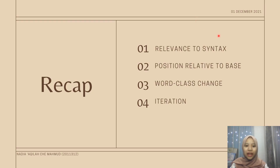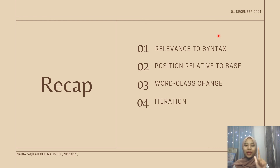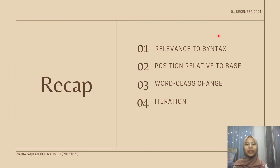To recap, there are four differences between inflectional and derivational properties that we have learned today: first, relevance to syntax; second, position relative to base; third, word class change; and fourth, iteration. That's all from me. Thank you. Bye.